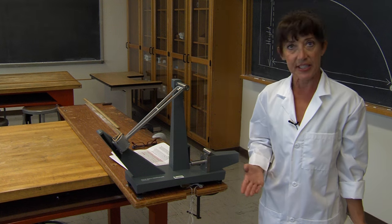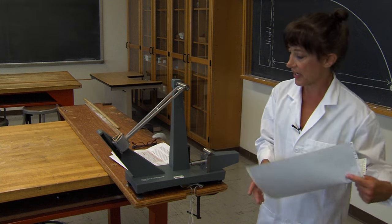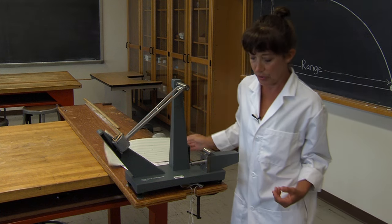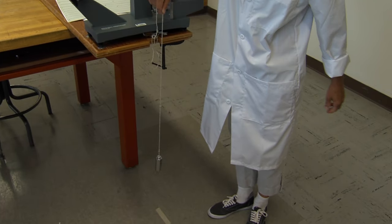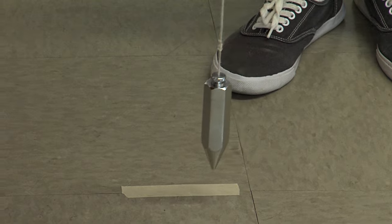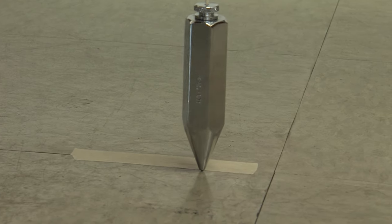Then you will need to measure the distance from the launch point to the edge of the catch box. To do so, you might want to make use of this plumb bob, which is simply a weight on a string. And this will allow you to determine where the projectile is being launched from. And you can make a mark on the floor with a piece of tape, and then just use the meter stick to measure the distance from there to the edge of the catch box.